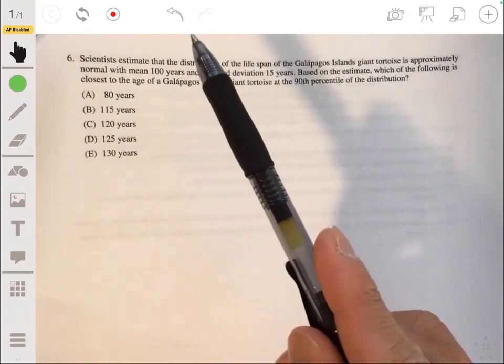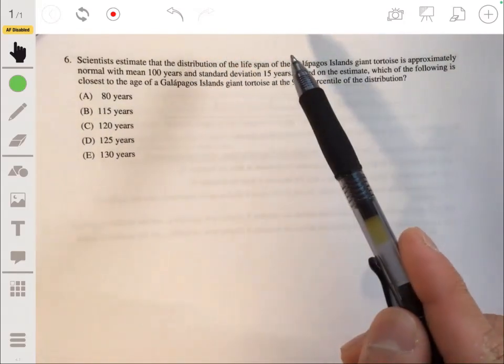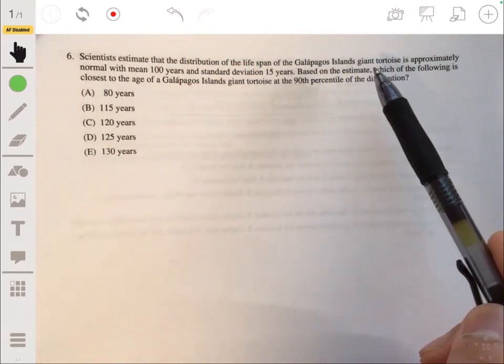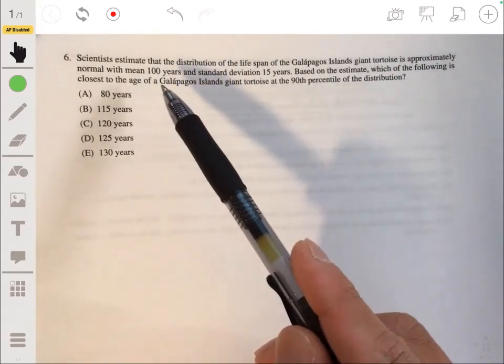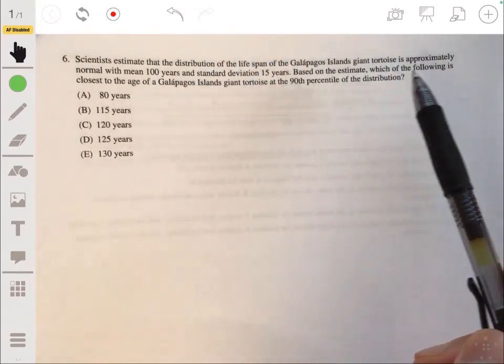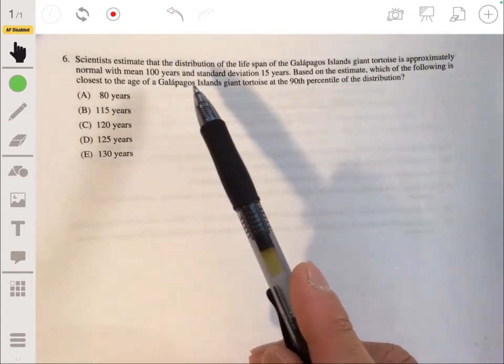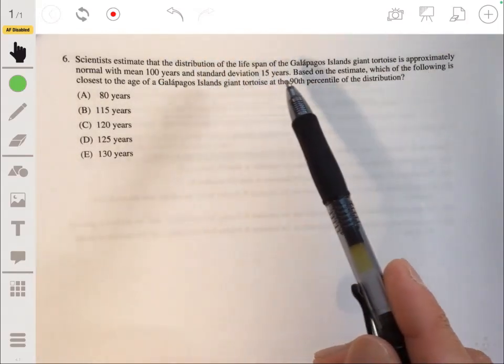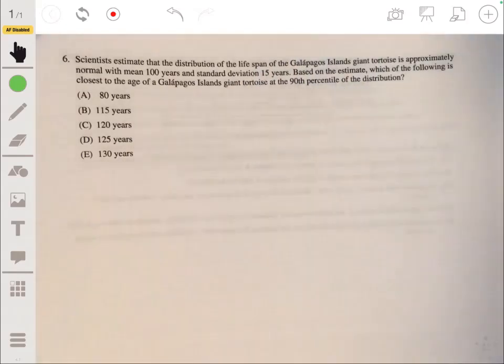All right, problem six. Scientists estimate that the distribution of the lifespan of the Galapagos Islands giant tortoise is approximately normal with mean of 100 years and standard deviation of 15 years. Based on the estimate, which of the following is closest to the age of a Galapagos Islands giant tortoise at the 90th percentile of the distribution?